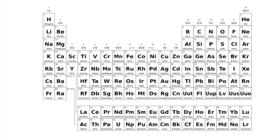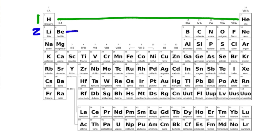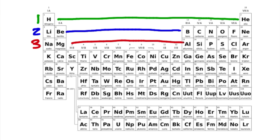The energy levels directly correspond with the periods on the periodic table. Energy level 1 is period 1, energy level 2 is period 2, energy level 3 is period 3, energy level 4 is period 4, and 5, 6, 7. These are the coefficients in electron configuration.